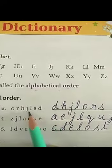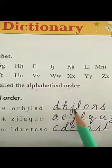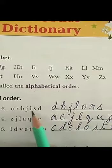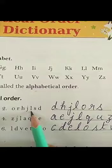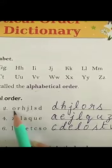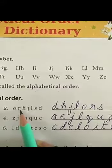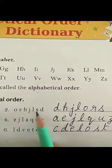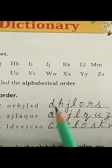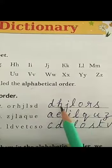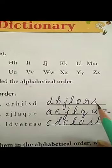And after that, in alphabetical order we have J. So we will write J at third place. In the same way, we will write L after J. And after L, we have O in alphabetical order. And after O we have R. And after that we have S. So the order will become D, H, J, L, O, R, S.